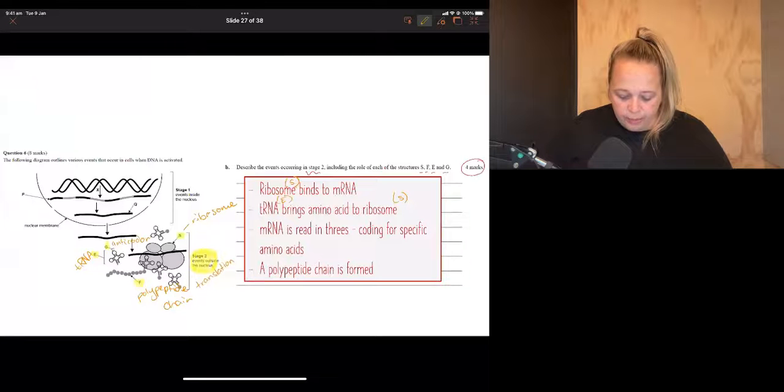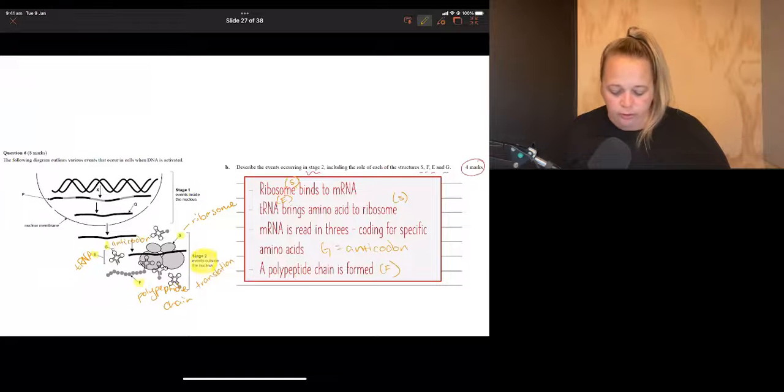You could say something here about each tRNA molecule. So G is the anticodon in there also. And then finally, a polypeptide chain is formed and that's F.